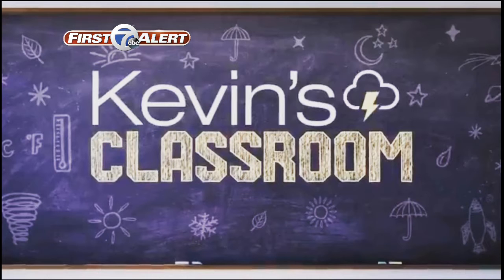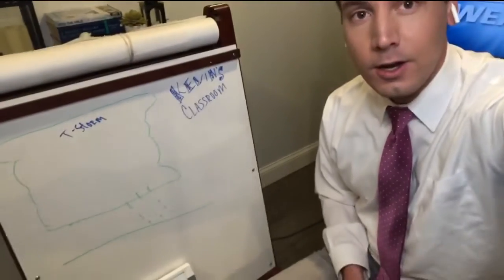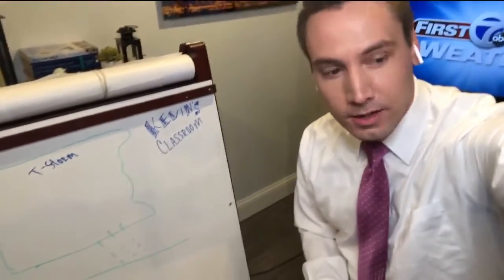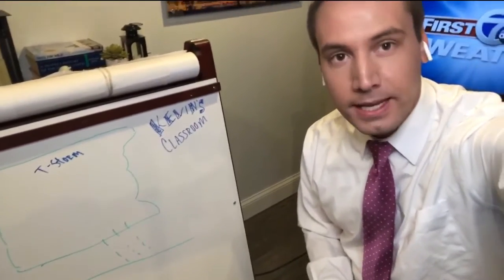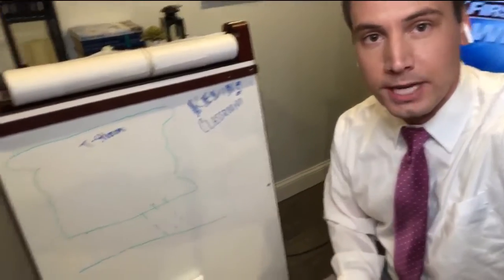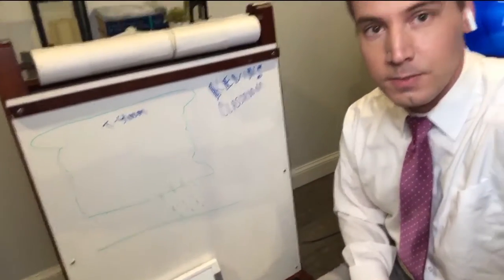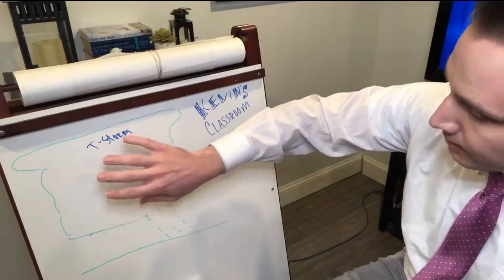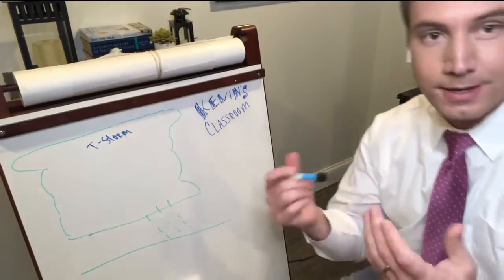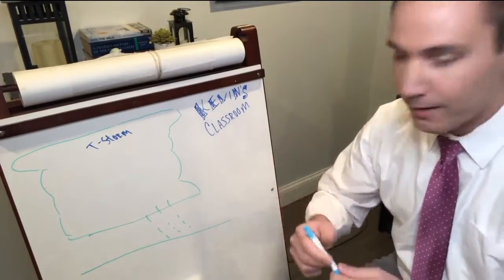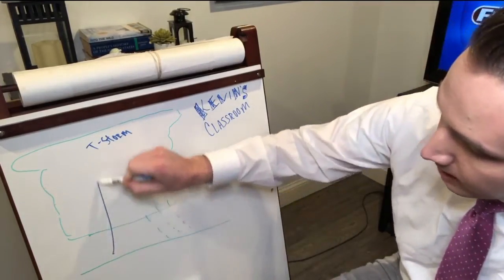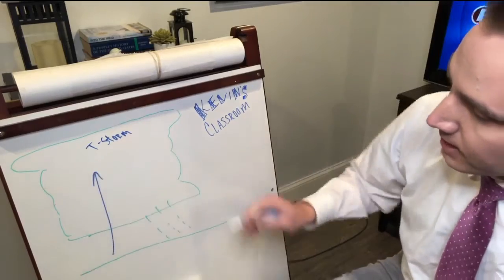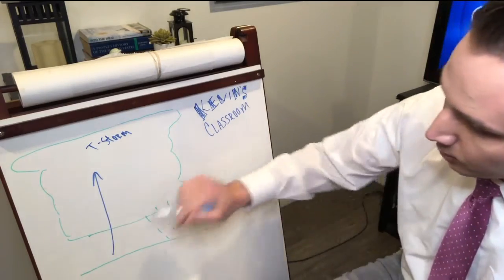I wanted to show you guys my little drawing that I made here. Basically, a supercell thunderstorm is a thunderstorm with rotation. This is my kind of crude drawing of a thunderstorm cloud. Thunderstorms are made up of updrafts, and an updraft is rising air — that's how clouds are formed, and that's how rain is formed.